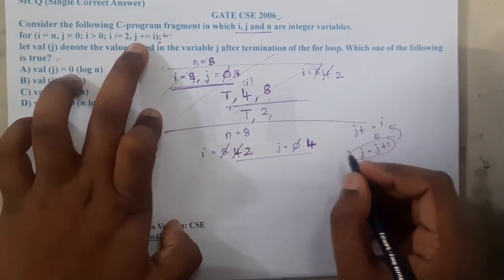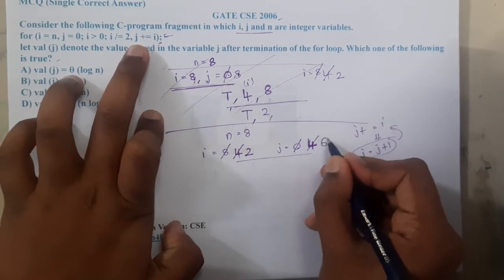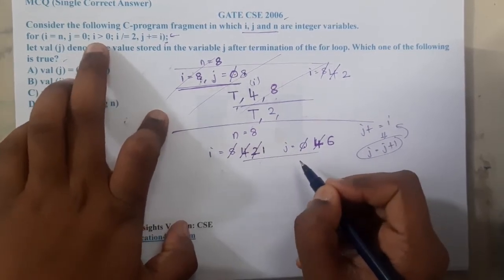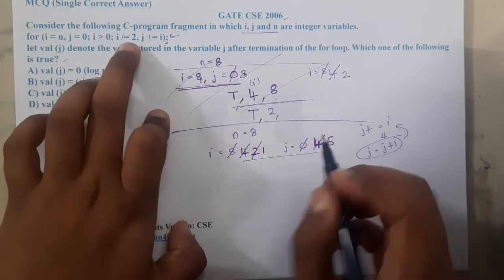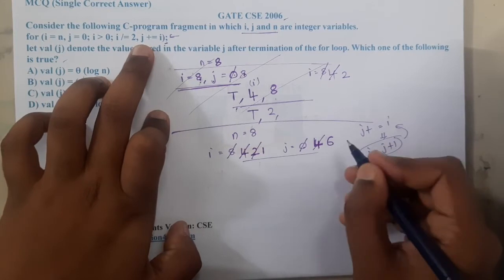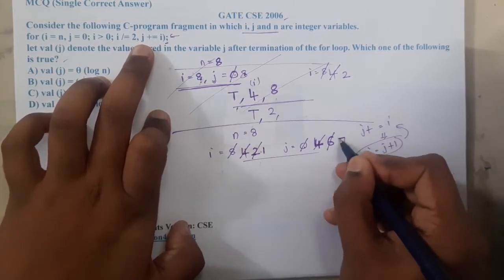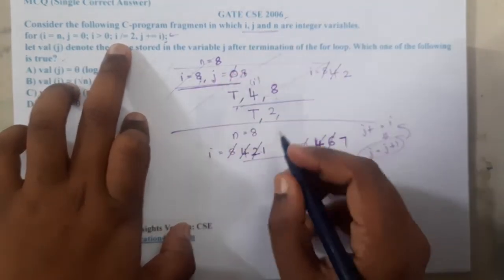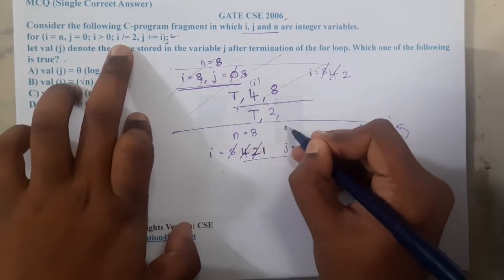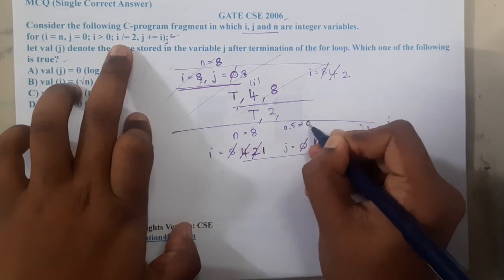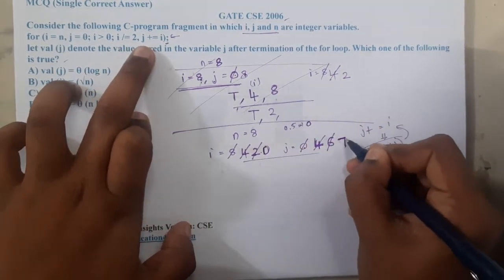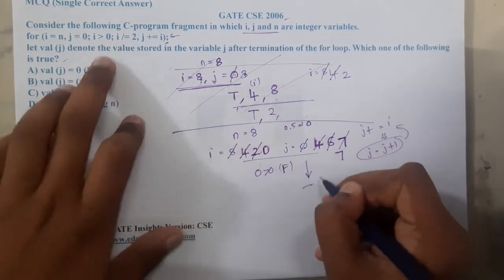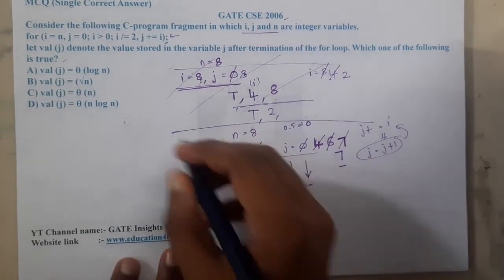Again checking the condition: is 4 greater than 0? Yes. Dividing i by 2 gives 2. Then j plus equals i, so j becomes 4 plus 2 equals 6. Again checking: is 2 greater than 0? Yes. Dividing 2 by 2 gives i equals 1. j plus equals i means j becomes 6 plus 1 equals 7. Again dividing: 1 divided by 2 is 0.5, and as this is an integer, the integer value of 0.5 is 0. So i becomes 0, and j plus 0 stays 7. Now checking: is 0 greater than 0? False — loop terminates. The value of j is 7.